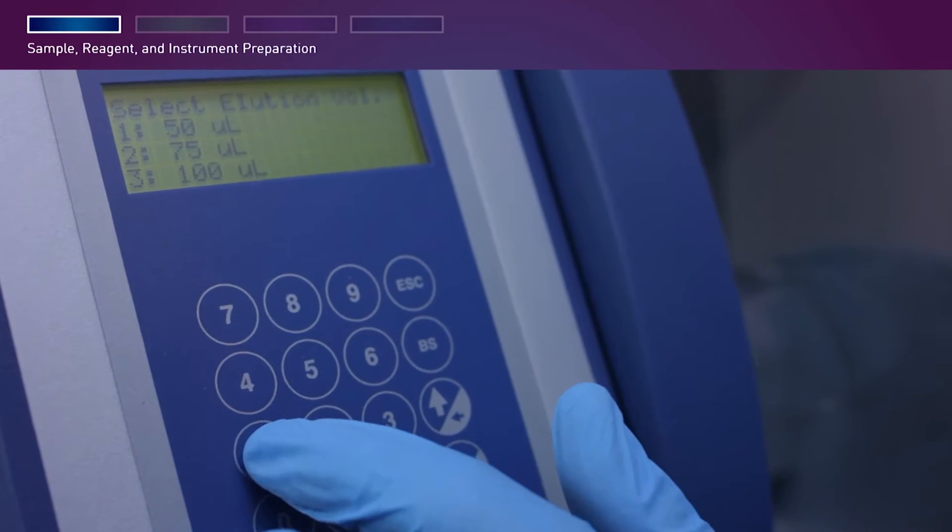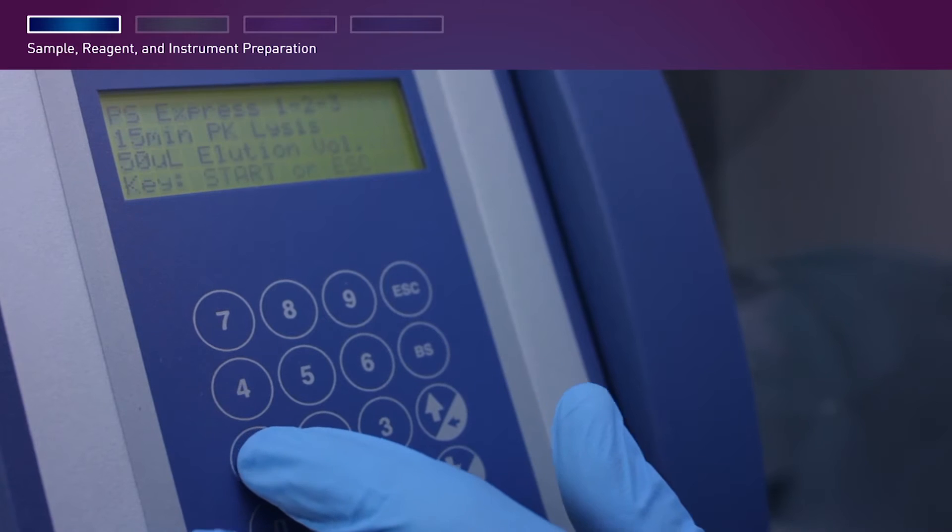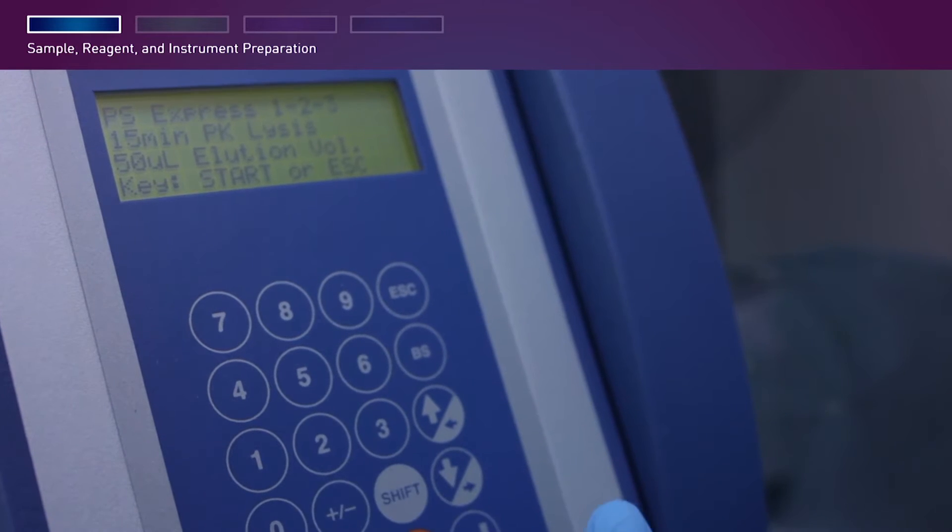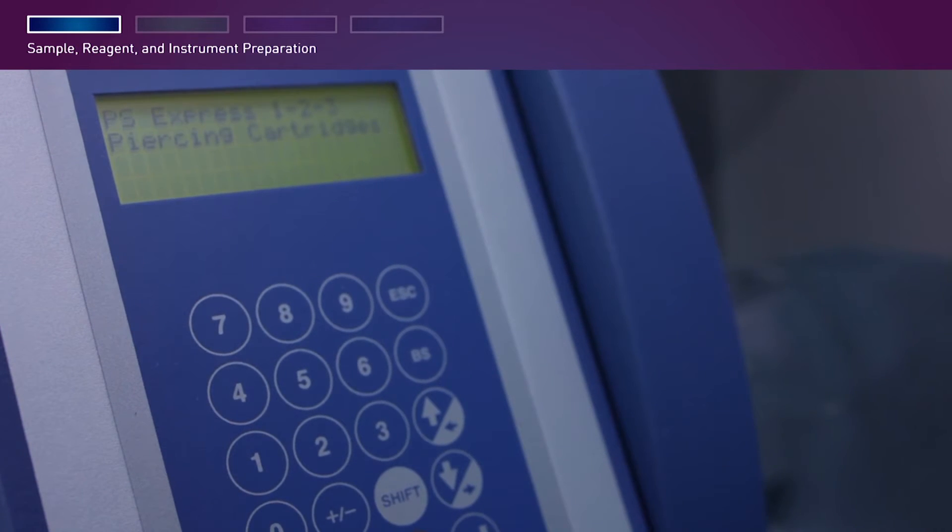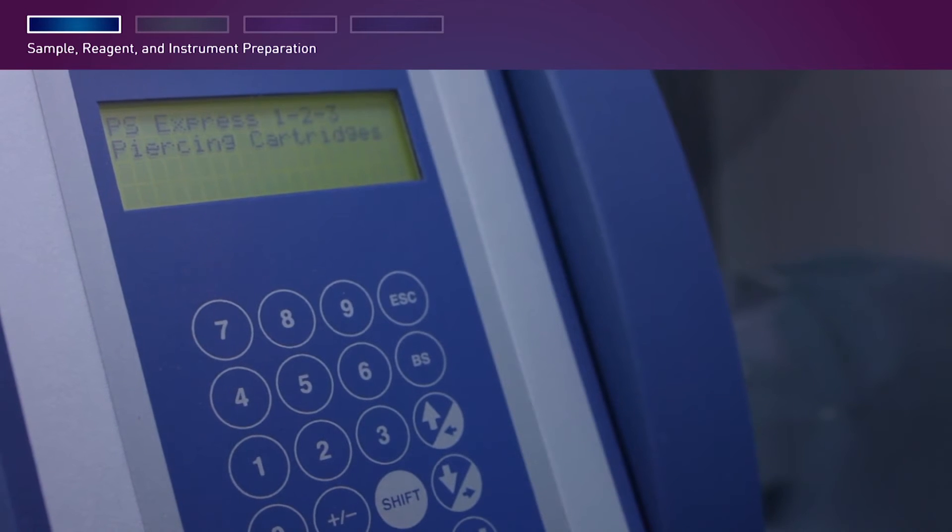Select the license time, select the elution volume, then review your selections and press Start. The screen shows the steps and the appropriate runtime remaining.